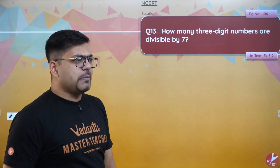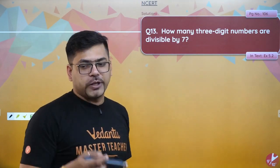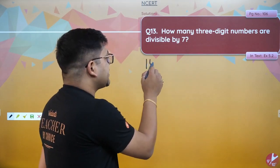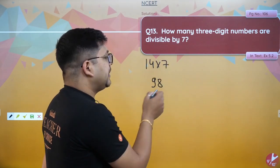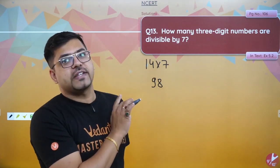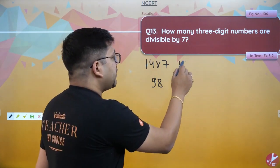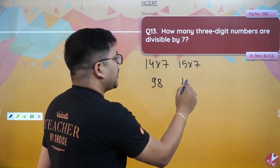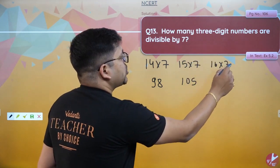See how — first of all, if you remember, 14 into 7 is 98, which is the last two-digit number divisible by 7. This is the 14th multiple of 7. So the 15th multiple is 105, the 16th multiple is next, and so on.